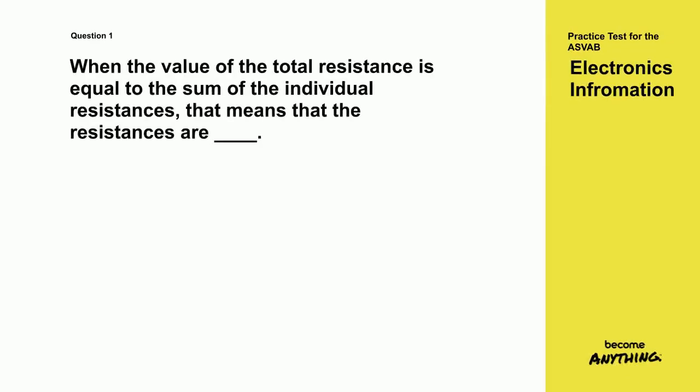Question 1. When the value of the total resistance is equal to the sum of the individual resistances, that means that the resistances are what? A in series, B in parallel, C in a mixed circuit, D in a closed circuit.